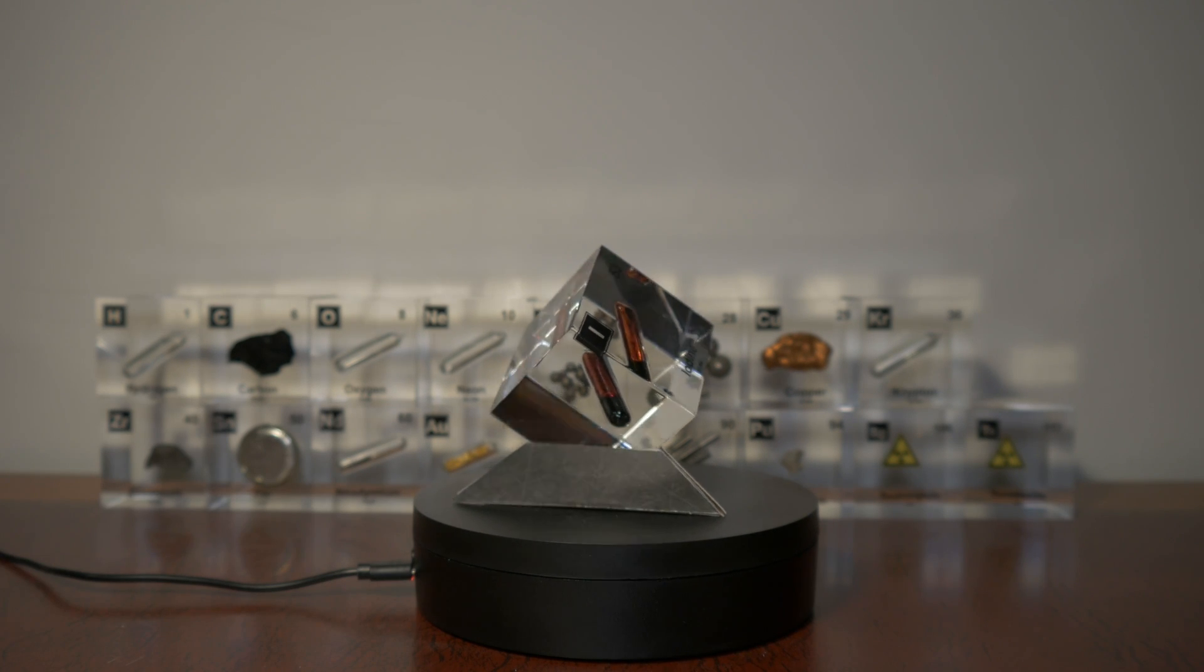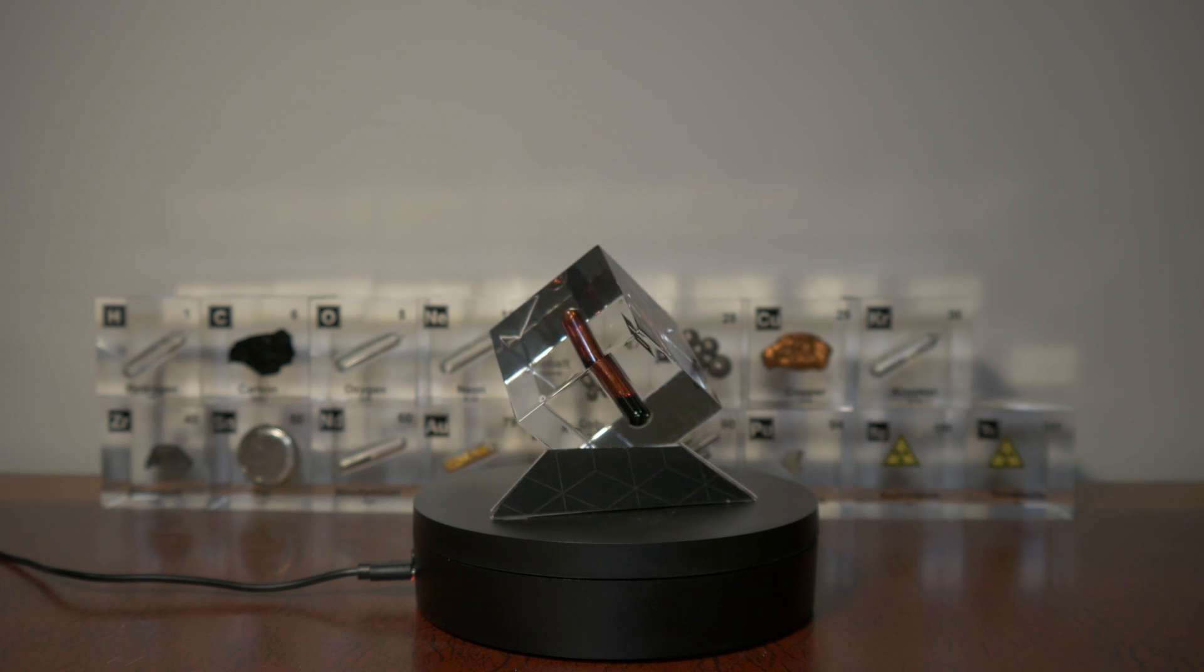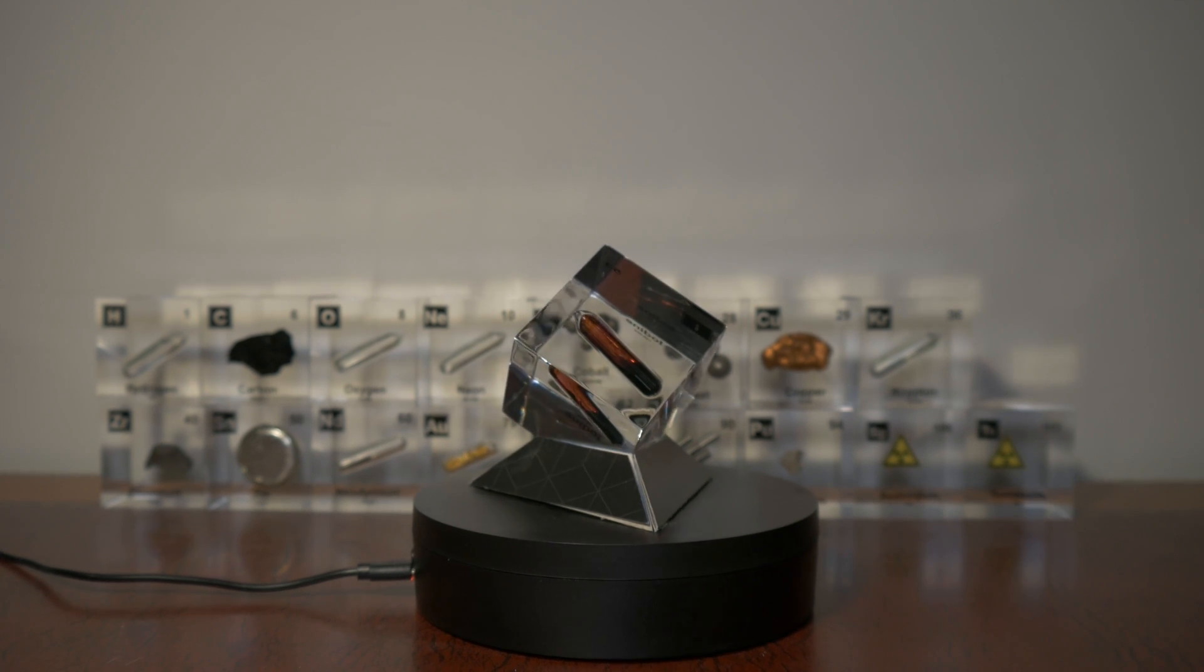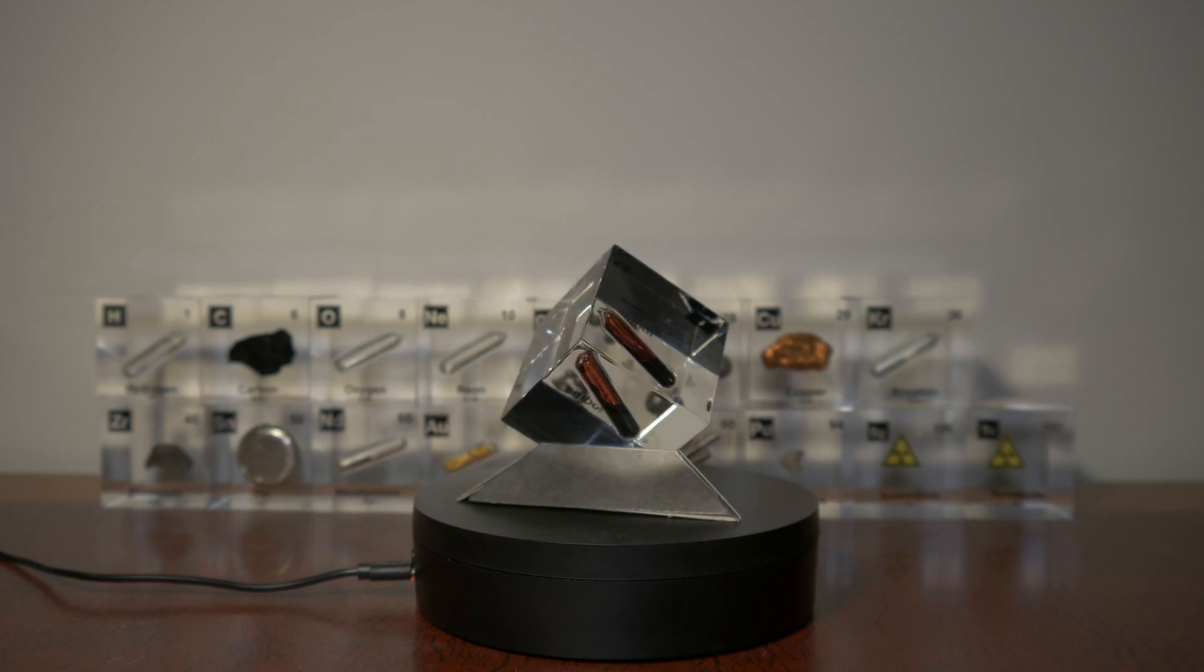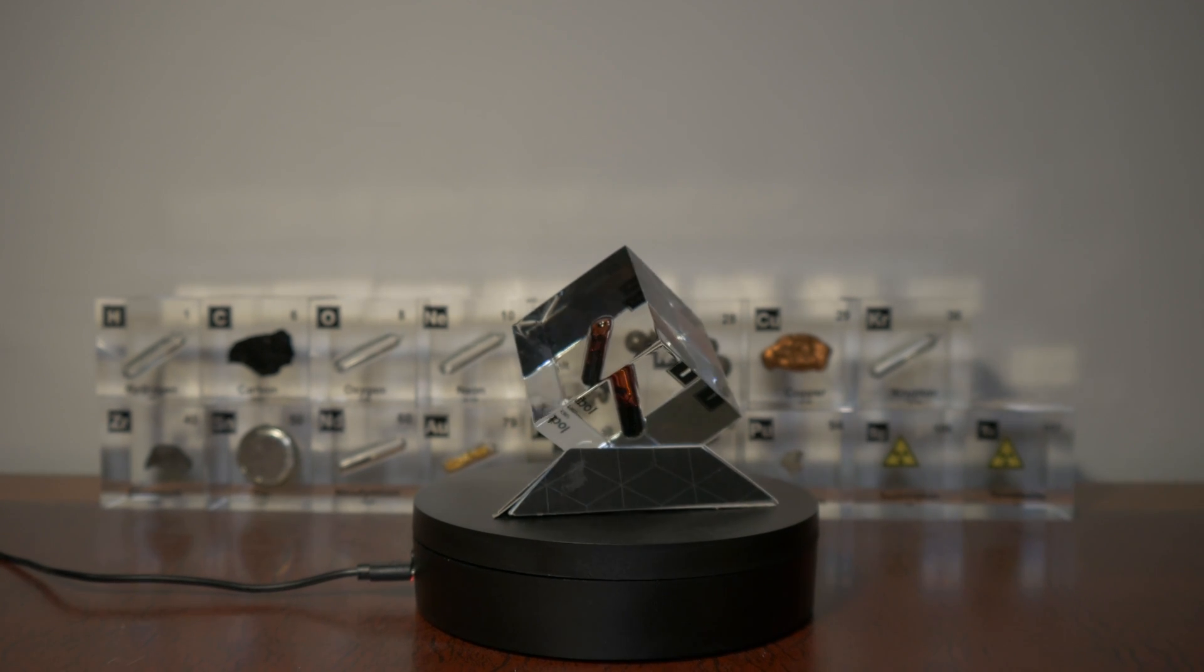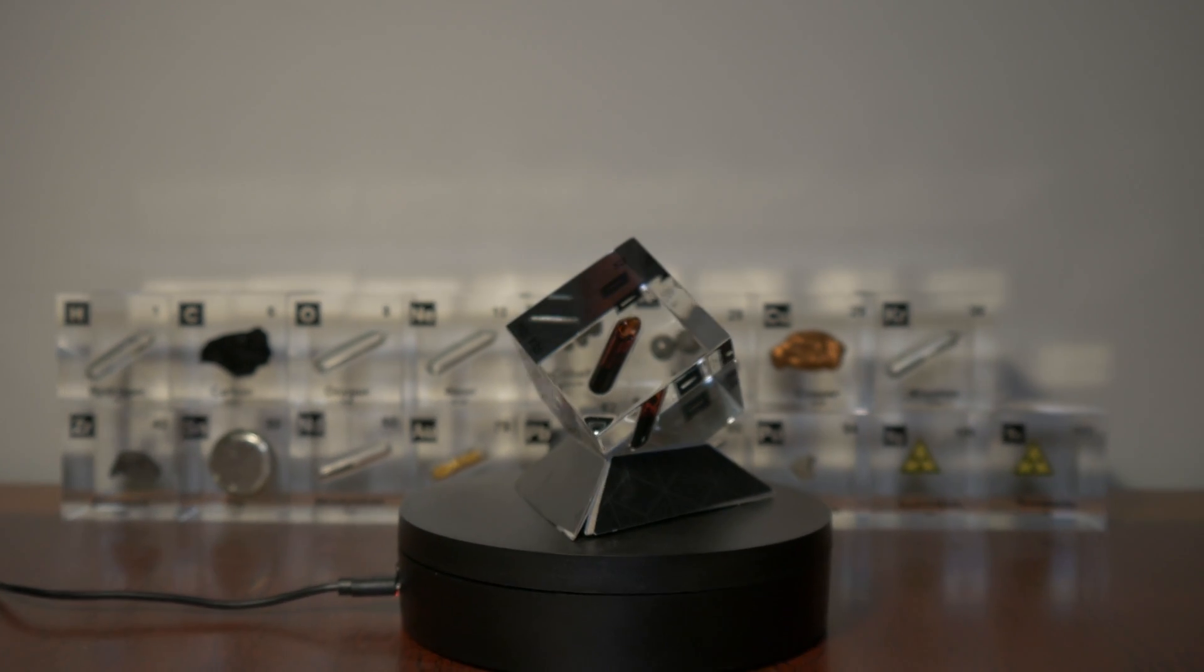Another thing that you can use iodine for is as an indicator to detect starch. A solution of iodine that you make so diluted that it's barely pink turns dark blue in the presence of starch.